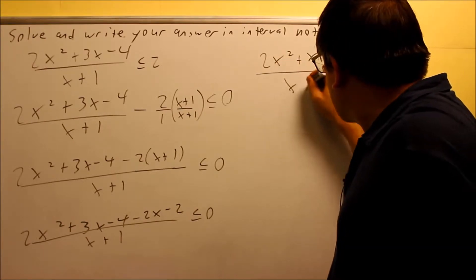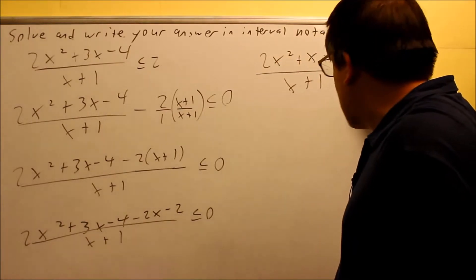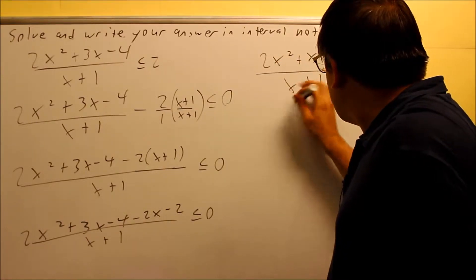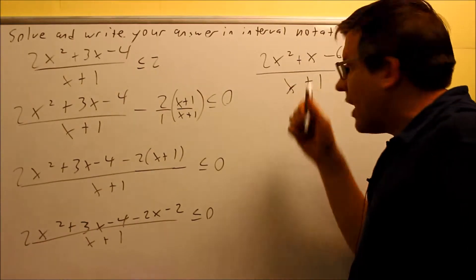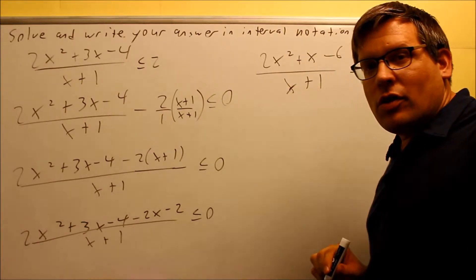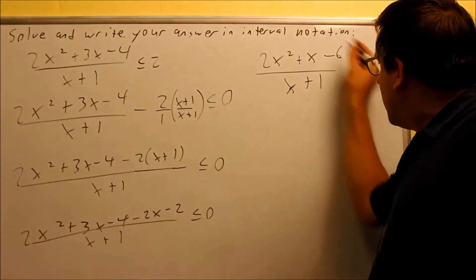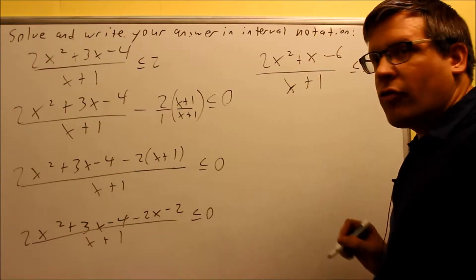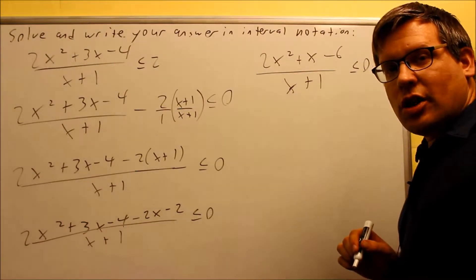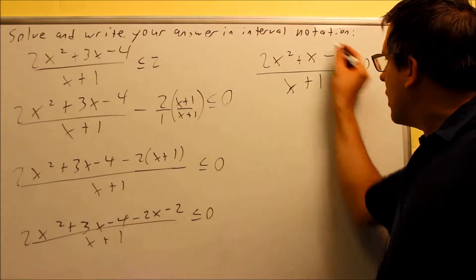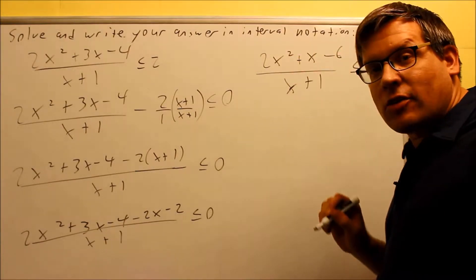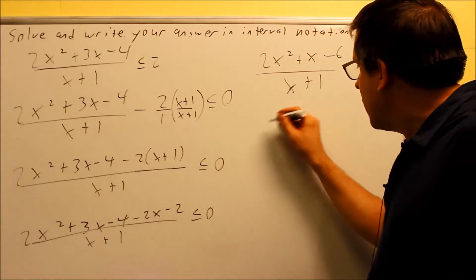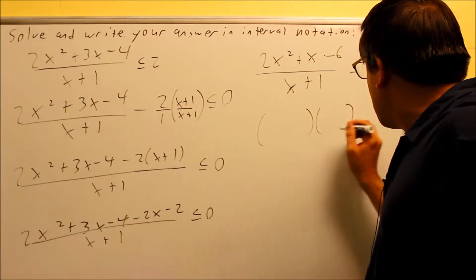All this is going to be over x plus 1, and that's less than or equal to 0. So now I have it combined together as a single fraction. We're still not done yet because we need to make sure this is factored. So if you can factor that, you want to go ahead and do that next step.